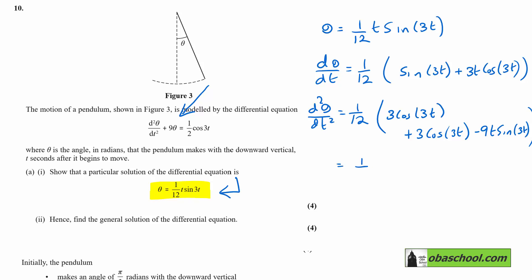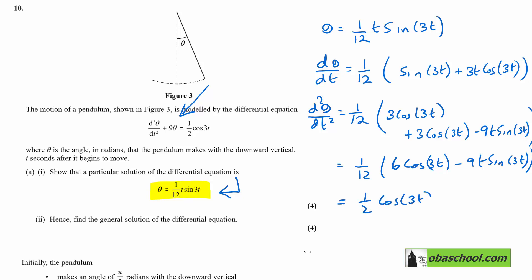Tidying that up gives (1/12)[6cos(3t) − 9t·sin(3t)], which simplifies to ½cos(3t) − (3/4)t·sin(3t).